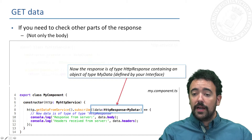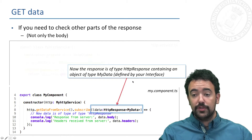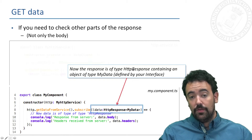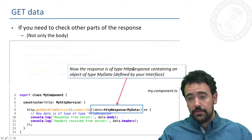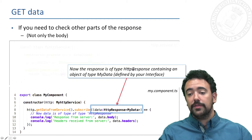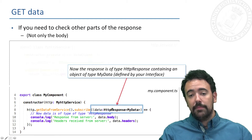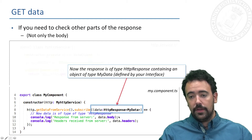Take into account that in this case the response is of a new type, HttpResponse, so you have to implement the method accordingly.